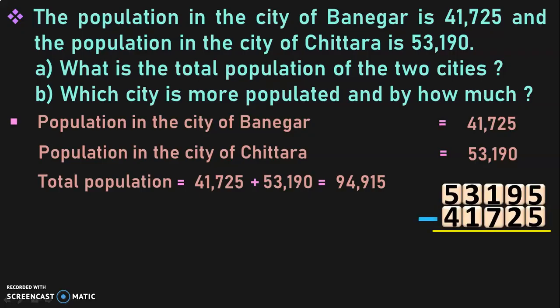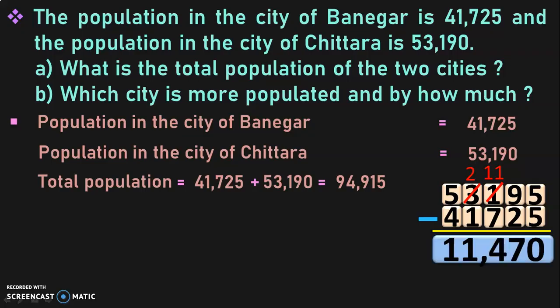To find out by how much, we subtract the population of Banegar from the population of Chittara: 53,190 minus 41,725. Begin from the one's place: 5 minus 5 is 0. 9 minus 2 is 7. 1 minus 7 cannot be done, so borrow and regroup — 3,000 becomes 2,000, and the 1,000 goes to the hundreds place making it 11 hundreds. 11 minus 7 is 4. Then 2 minus 1 is 1, and 5 minus 4 is 1. The answer is 11,465.